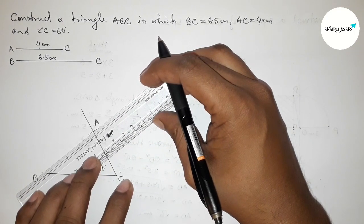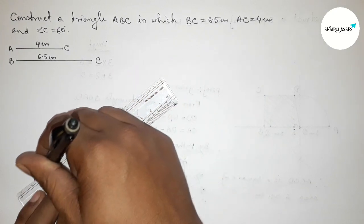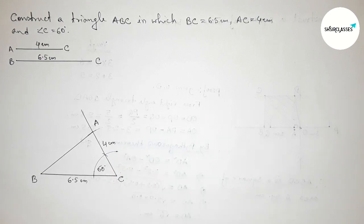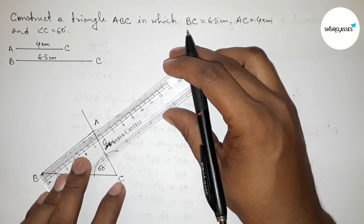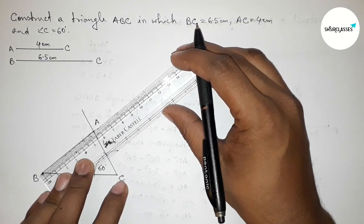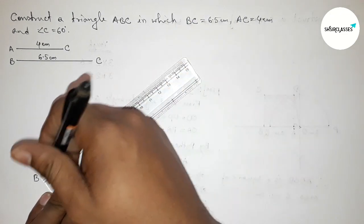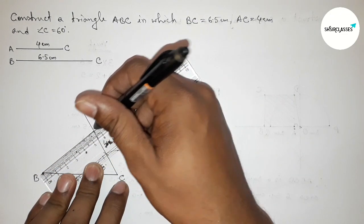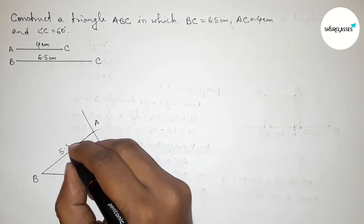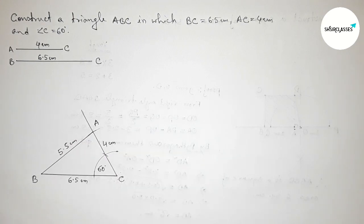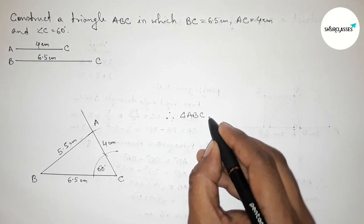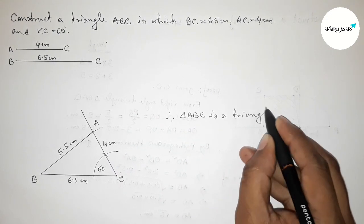Next, joining the side AB to get triangle ABC. AC equals 4 centimeter. Now measuring the side AB with the help of a scale — this is approximately 5.5 centimeter. So AB equals 5.5 centimeter approximately.